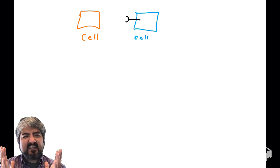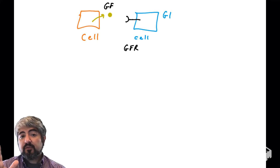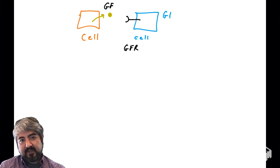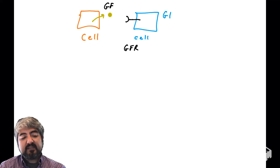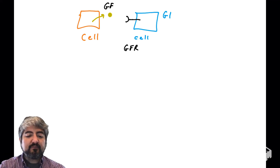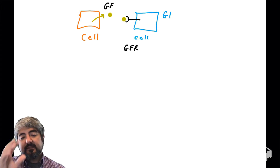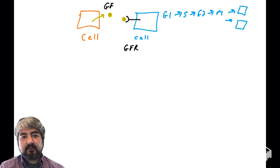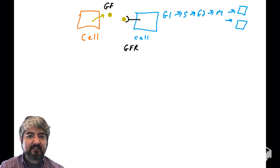Here I've drawn two cells: one cell has a growth factor receptor, which I abbreviate as GFR, and another cell releases the growth factor. So one cell is the source of the signal, and one cell receives the signal. When a cell releases a growth factor, it will bind to a growth factor receptor, and that binding will typically trigger that cell to get a signal to go through the cell cycle. That's the general function of growth factors and growth factor receptors.